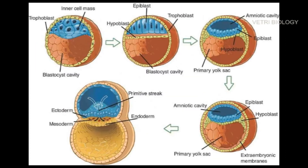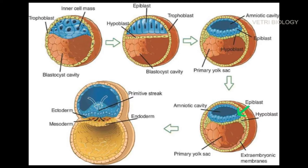Immediately after implantation, the inner cell mass in the blastocyst is differentiated into epiblast and hypoblast. These two layers continue to develop and form cavities inside. The hypoblast cells form a larger cavity called yolk sac, and the epiblast cells form a cavity called amniotic cavity.